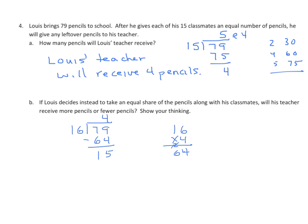So we have 4, each one is going to get 4, including Louis this time. And now his teacher gets 15. And that's a larger number, but we know that 15 is less than 16. So Louis's teacher will receive 11 more pencils.